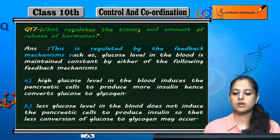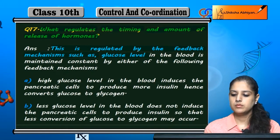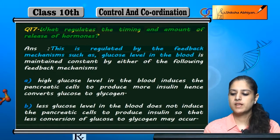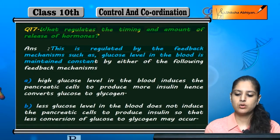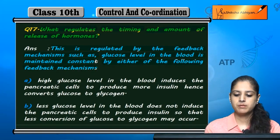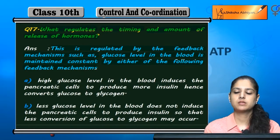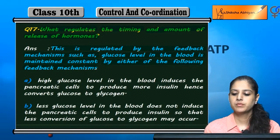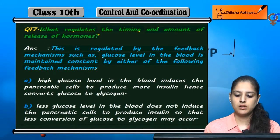For example, the glucose level in the body is maintained constant by feedback mechanisms. We can see that the body's glucose level is maintained in two ways.